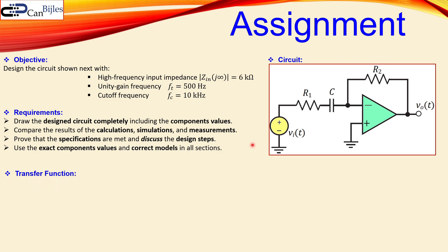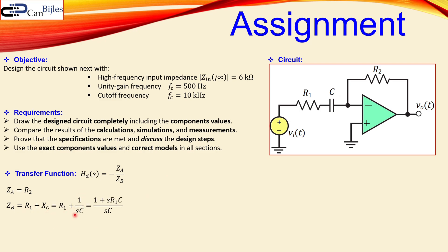The transfer function is required to calculate the component values. The output divided by the input gives H(s) = -ZA / ZB for this differentiator circuit. ZA is the feedback impedance which is just R2, and ZB is the series combination of R1 and the capacitor reactance. The capacitor reactance in the Laplace domain is 1/(sC), giving us ZB = R1 + 1/(sC).